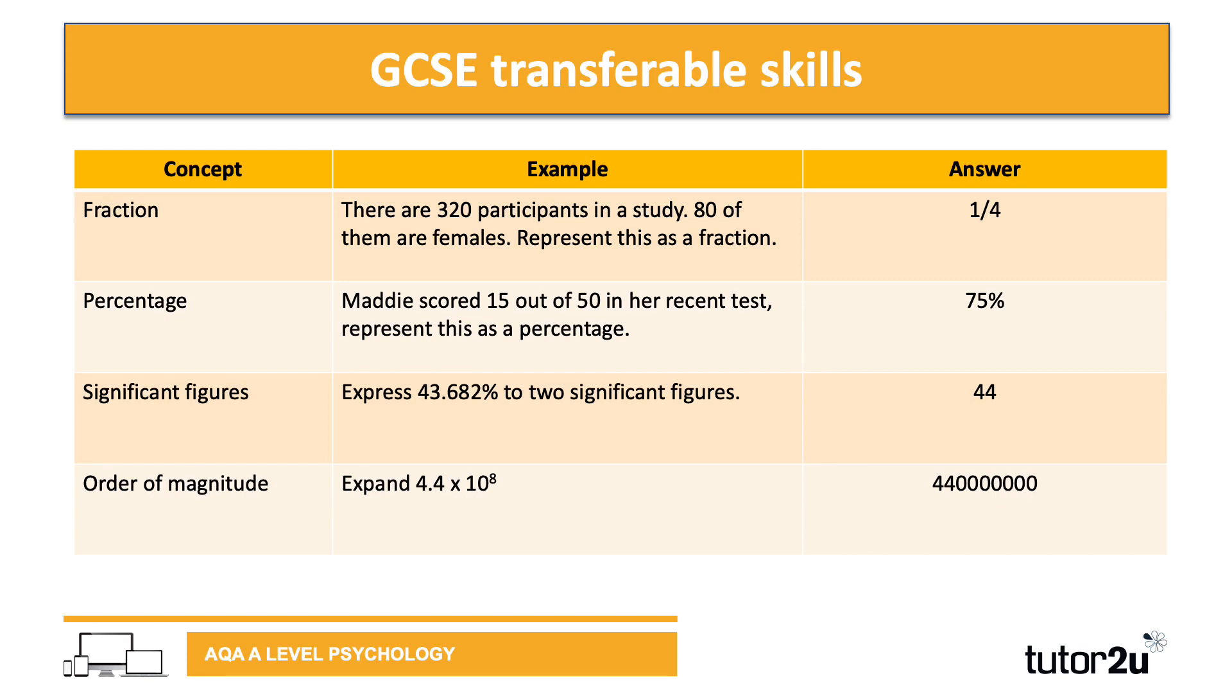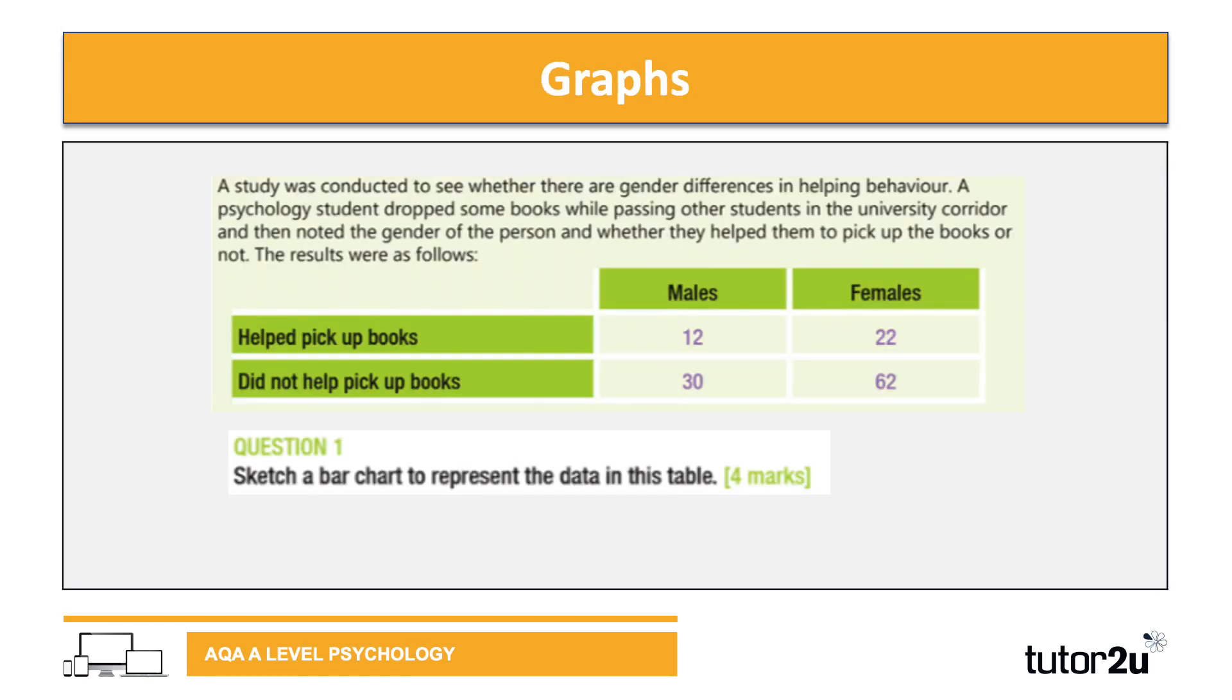Moving on to graphs, we're going to look at a couple of questions you would expect to see in an exam-style paper. You've got a stem here and a table of findings, then a question asking you for four marks to sketch a bar chart to represent that data. Have a go at sketching a bar graph if you want - pause the video and we'll go through the answer next.